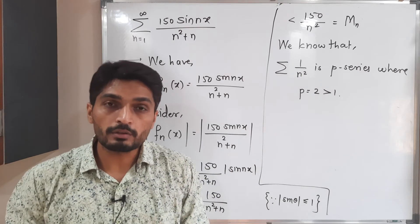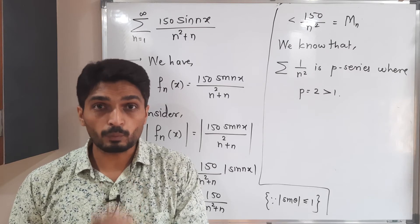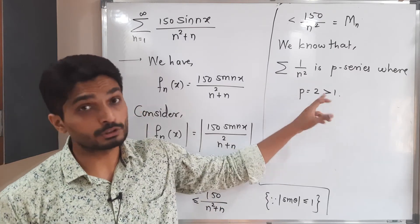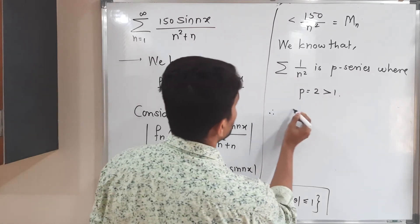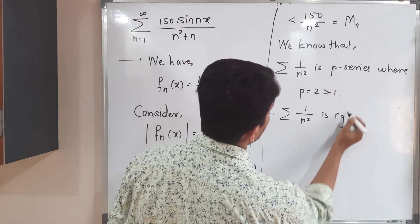So in SYBSC we have already seen that result: if p-series, p greater than 1, then that p-series is convergent. So here p is 2, which is greater than 1, so that's why this series is convergent. Therefore, summation 1 upon n square is a convergent series.